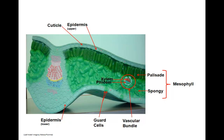Specific regions of the mesophyll include the palisade mesophyll, made up of column-shaped cells, and a spongy mesophyll made up of loosely spaced cells. The vascular bundle makes up a tiny vein through which water and minerals are conducted in the xylem tissues, and the sugars produced through photosynthesis are transported via the phloem.